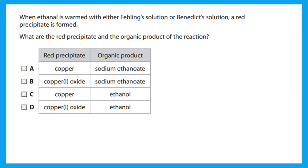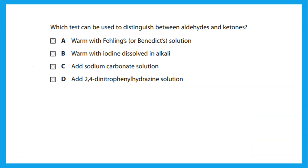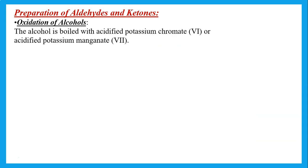When ethanol is warmed with Fehling's or Benedict's solution, a red precipitate is formed. The red precipitate is copper(I) oxide, and the organic product is sodium ethanoate. To obtain aldehydes or ketones, we can perform oxidation of alcohols.